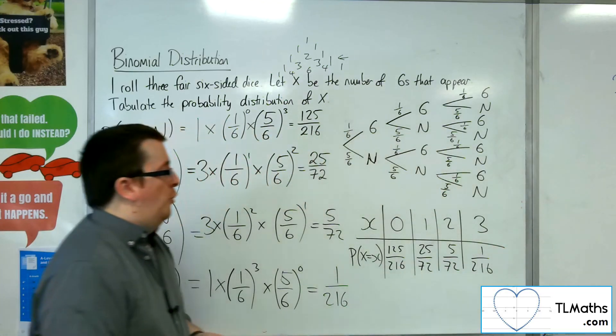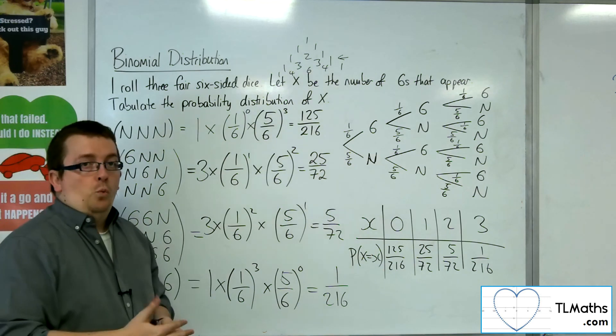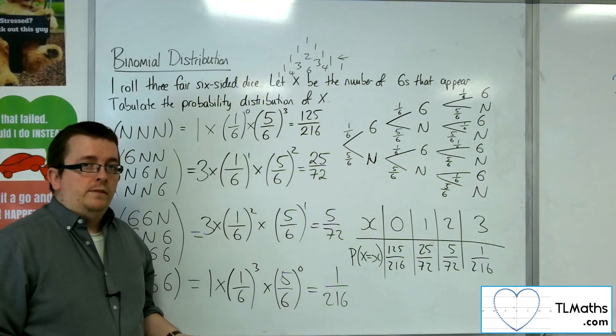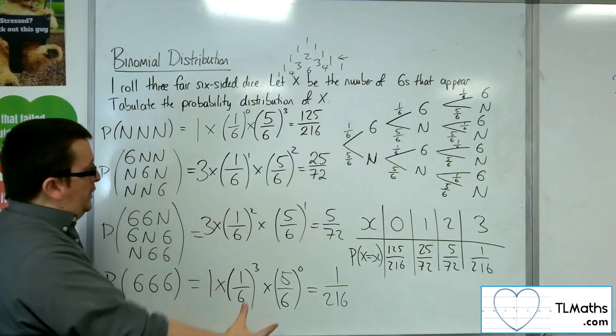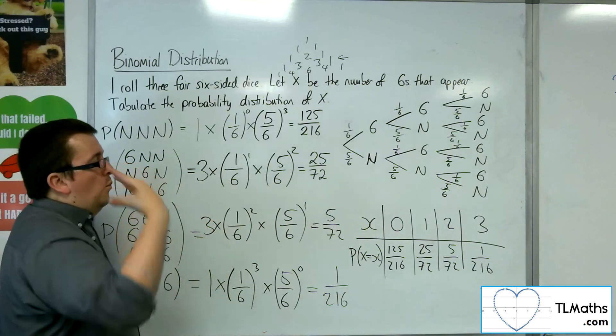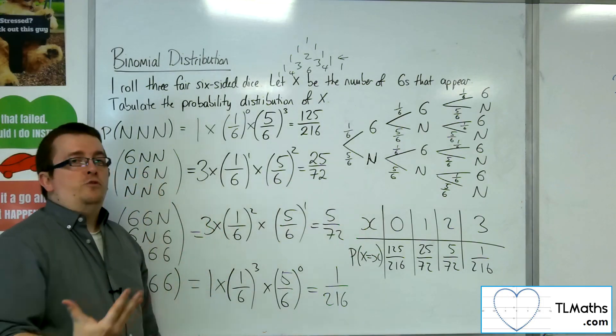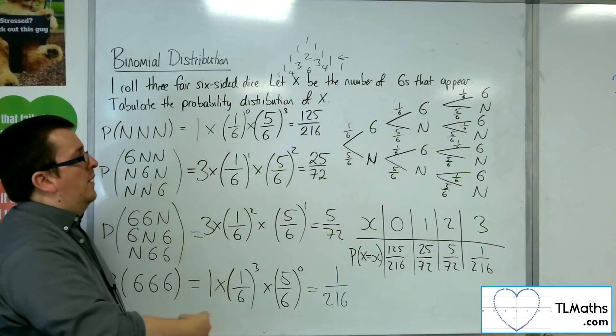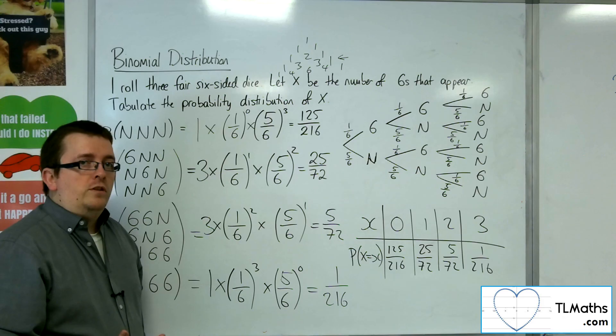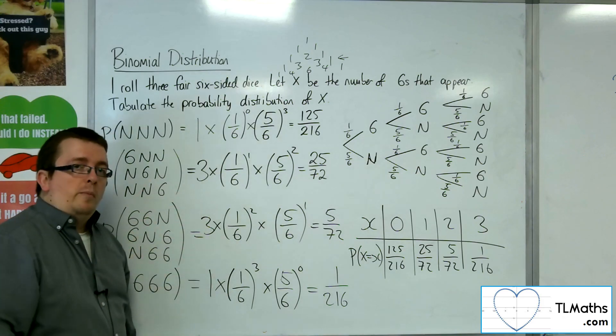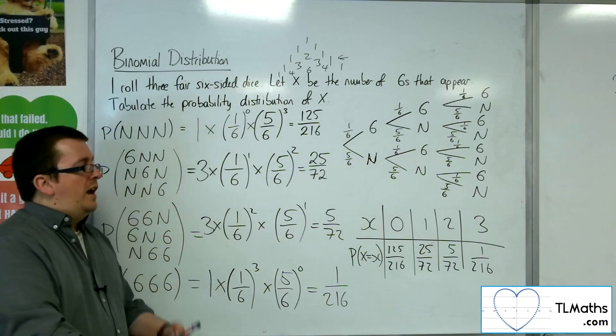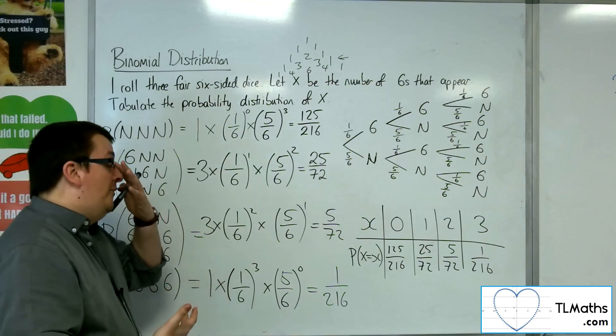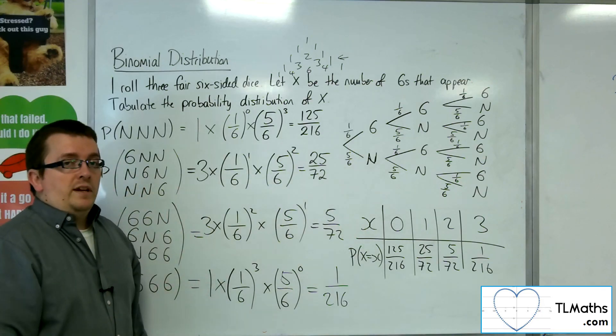And we should find that those four probabilities add up to 1, as expected. So here is your first look in at how the binomial distribution comes about, and how the binomial setup that we've seen in binomial expansion can be fed into a probability question. And we're going to look at how we can develop this through the coming videos.